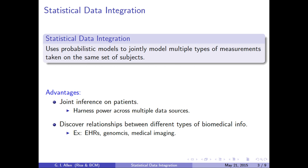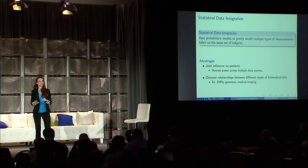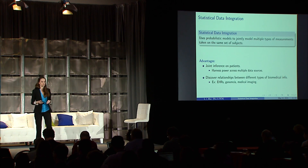There are numerous advantages to this approach. First, if we want to make inference about clinical outcomes or patient outcomes, we want to harness power across all these multiple data sets to make better inferences — we're going to gain a lot of statistical power. And also, we want to look at the biomarkers themselves and discover relationships between biomarkers that we might not be able to see by looking at just one type of data separately. We can also think about how to put electronic health records together with medical imaging and genomics to make joint inferences about patients and health.